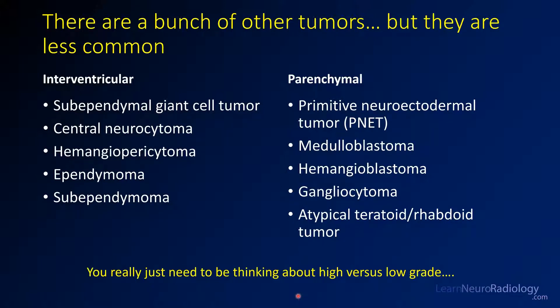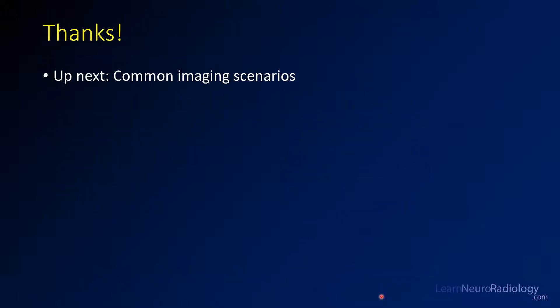In general, if you can tell whether someone has a high-grade versus low-grade tumor, you've done most of the work — people need to know if something needs to be addressed urgently or can wait. Thanks for watching this video. Up next, we'll recap some common imaging scenarios with brain tumors and how to form a differential diagnosis. If you enjoyed the video, be sure to subscribe, check out our other videos on our YouTube channel, or visit the website at LearnNeurRadiology.com.